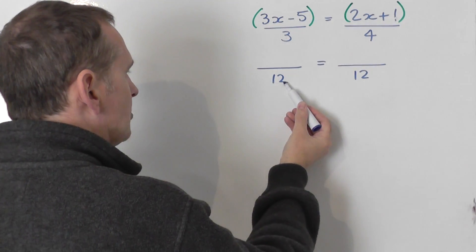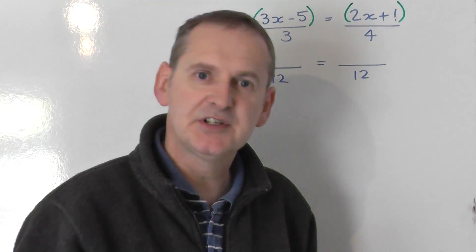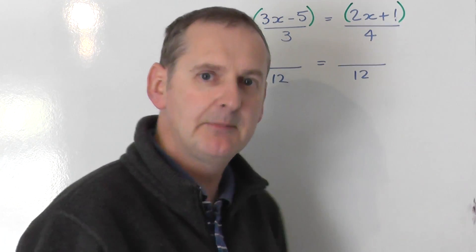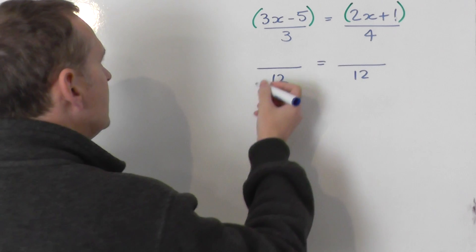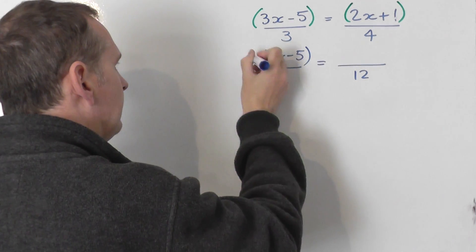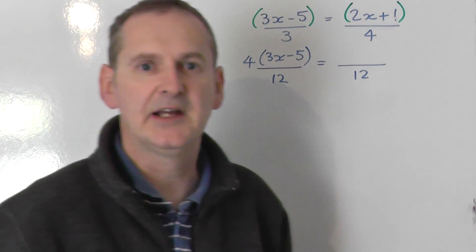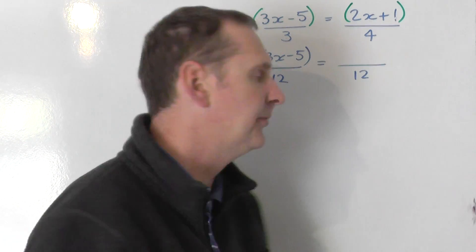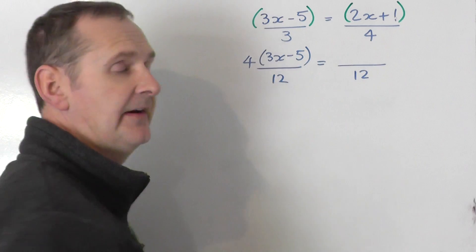The 3 gets changed into 12 by multiplying it by 4. So to keep the fraction on the left the same, I must multiply the top by 4. So I take the bracket 3x minus 5 and I multiply it by 4 by putting a 4 outside. So 4 lots of the bracket on the top. So that fraction is the same as that fraction.